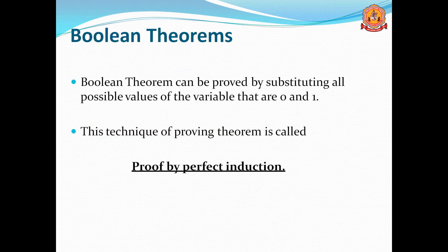The next topic is Boolean theorems — the fundamental laws. The Boolean theorems can be proved by substituting all the possible values. Since only two possible values exist — 0 and 1 — we substitute each one. This technique of proving a theorem is called proof by perfect induction.